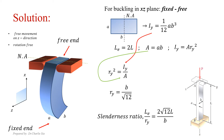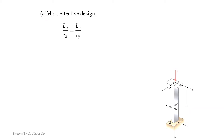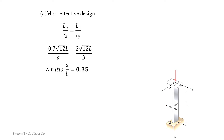The slenderness ratio for the XZ plane equals 2√12 × L / b. For the most efficient design, the slenderness ratio for both planes must be the same, so L_eff/Rz = L_eff/Ry. Solving for the ratio gives A/B = 0.35, which is the answer for part A.